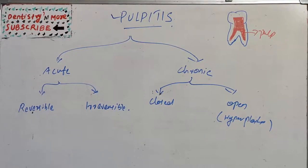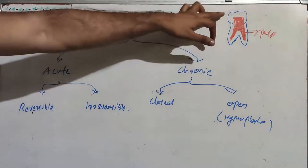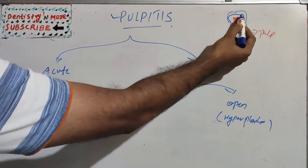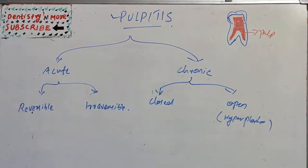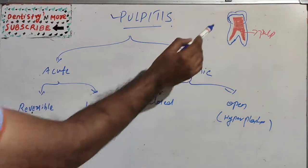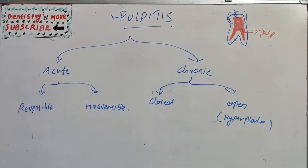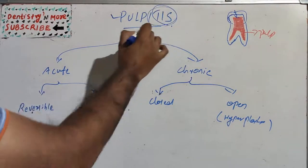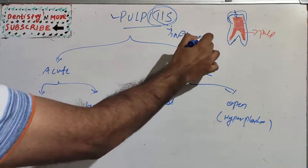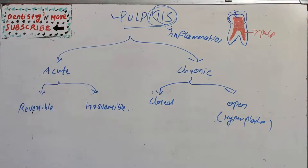Welcome back to another session in Dentistry and More. Today we have a simple topic: pulpitis. Most of you will know the details of the tooth — the outermost covering is enamel, then the inner covering known as dentine, and the innermost part is the pulp, where the nerves, blood vessels, and all other vital structures are lying. When caries starts from enamel, it reaches dentine, then goes to pulp. When it touches or gets very close to pulp, symptoms like sensitivity or pain arise. Pulpitis is simply the inflammation of the pulp.